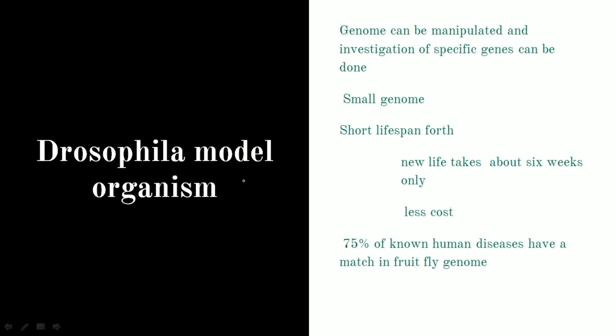Now, why is Drosophila used as a model organism? There are various reasons for the same. The very first point is that the genome can be manipulated and the investigation of specific genes can be done — Drosophila's genome can easily be changed and studied. The second point is that the genome of Drosophila is small in size, hence the handling of the genome and the information becomes easy.